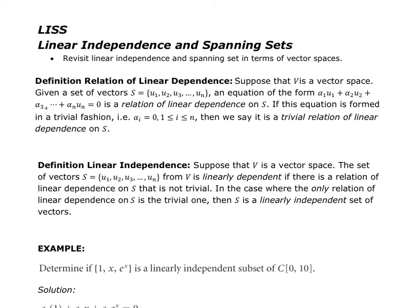In this video, we're going to look at linear independence and spanning sets in terms of vector spaces. Suppose V is a vector space. If I can find scalar multipliers alpha 1 through alpha n such that the linear combination of those scalars and my vectors equals zero, then we say they are linearly dependent — meaning the alphas are not all zero. Similarly, if the only solution is that all alphas equal zero, then we say they are linearly independent.